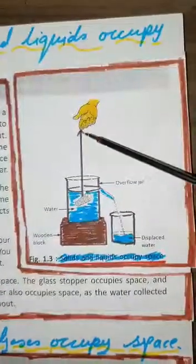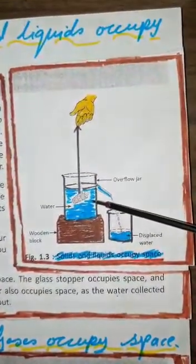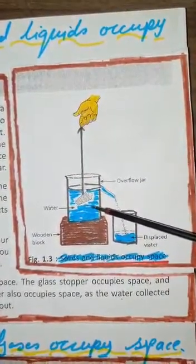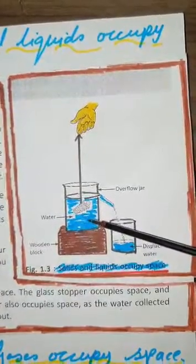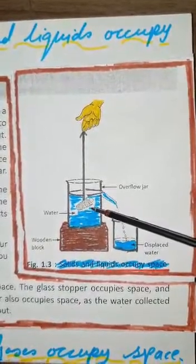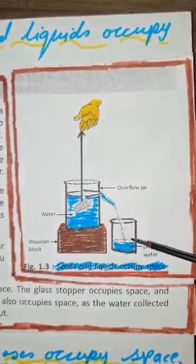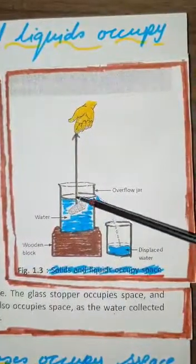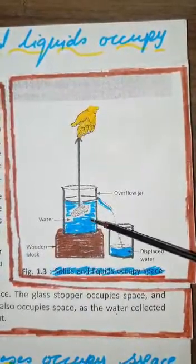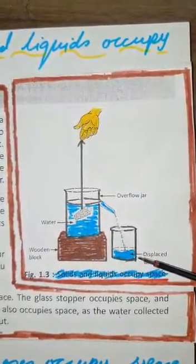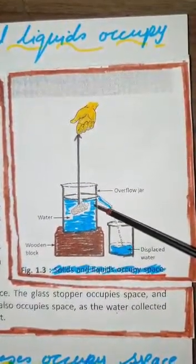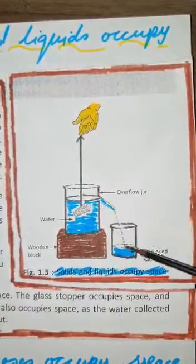Now gently lower the glass stopper into the water in the overflow jar till it gets completely immersed. Now what you will see? The glass stopper will occupy space and push the water out of the overflow jar. Now remove the glass stopper from the overflow jar and pour the water collected in the beaker into the overflow jar. What you will notice? You will notice that the overflow jar is filled till the level of its spout.